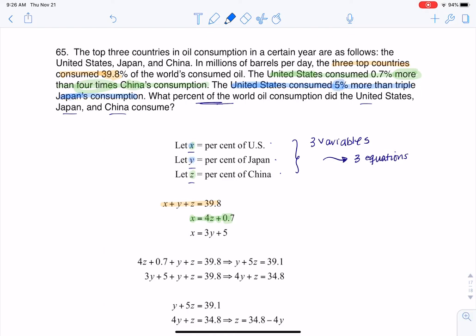All right. So if I look at 5% more, I'm going to add 0.05 to something, or I should say I'm going to add 5 to something because it's 5%. And then I'm going to triple Japan. So here we go. I'm going to say the U.S. was 5% more than three times Japan's consumption. And that's where this third equation is coming from.